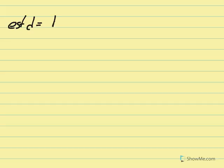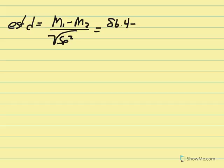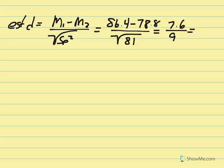Although this problem didn't ask for it, I'll calculate estimated d and r squared as additional effect size measures. Estimated d equals sample mean 1 minus sample mean 2 over the square root of pooled variance. Mean difference was 7.6, and the square root of pooled variance 81 is 9. So d equals 7.6 over 9, giving us 0.84. This means the distribution of mean differences shifted 0.84 standard deviation units upward as a result of listening to music during the math assessment.